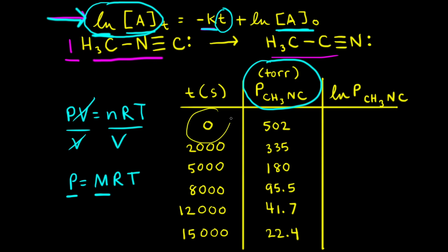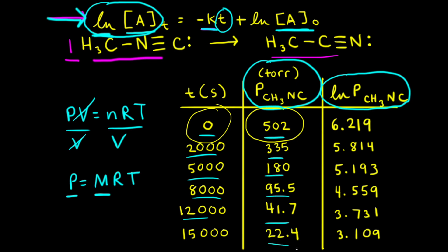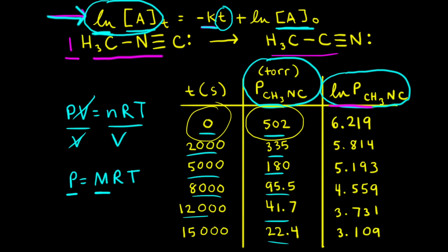We need a new column in our data table for the natural log of the pressure of methyl isonitrile. For example, when time is equal to zero, the pressure of methyl isonitrile is 502 torr, so we take the natural log of 502, which equals 6.219. I've gone ahead and filled in this last column. Notice that as time increases, the pressure of methyl isonitrile decreases since it's being converted to acetonitrile. Our graph will have the natural log of the pressure on the y-axis and time on the x-axis, with the first point at (0 s, 6.219).